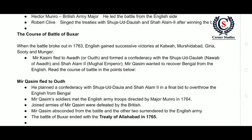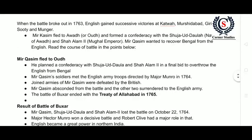Mir Qasim thought that his powers were very limited against the British, so he planned a confederacy with Sujavdala and Shalem the Second to overthrow the English from Bengal. Mir Qasim's soldiers met the English army troops directed by Major Munro in 1764, and Mir Qasim was ultimately defeated in the war.